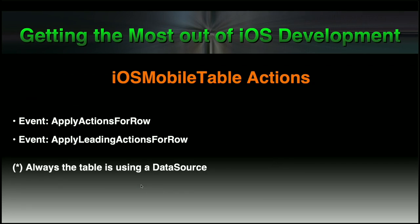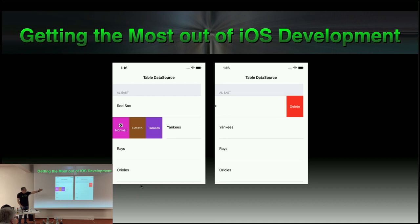Another area we improved is iOS Mobile Table actions. Until now we had the regular trailing actions shown when you slide rows to the left. Now we also provide leading actions, shown when you slide rows to the right. This functionality is provided when you are using a data source, which usually means you are using custom cells as rows on the table.